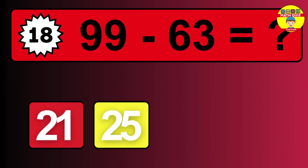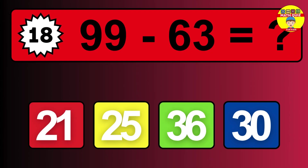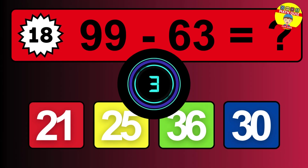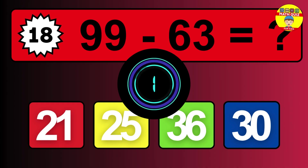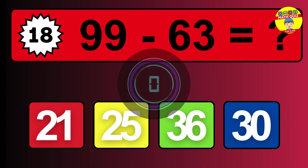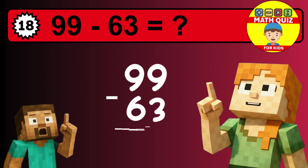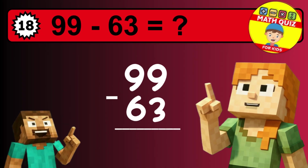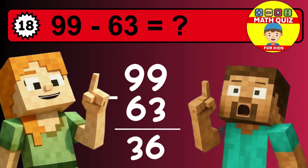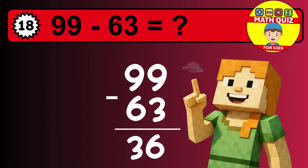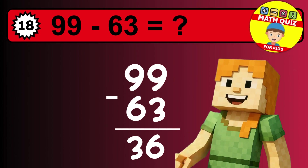What is 99 minus 63? Time to think. Then we go to the tens: 9 minus 6 is 3. The final answer is 36.